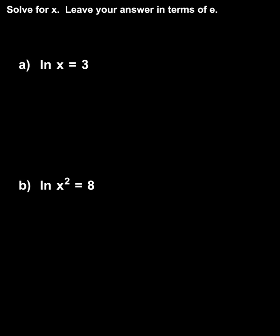To solve for x in the first equation, ln x equals 3, we simply switch the equation from logarithmic to exponential form. Remember that ln x means the natural log of x, and a natural log has a base of e.